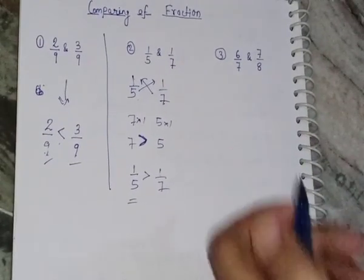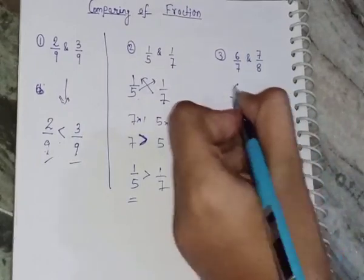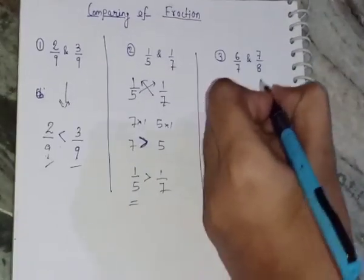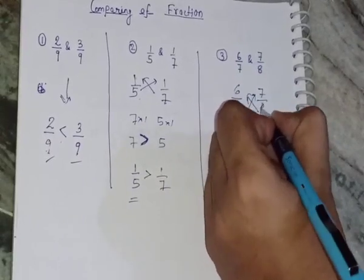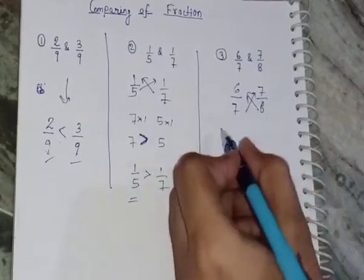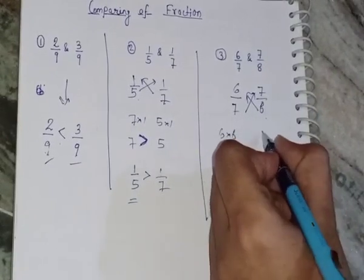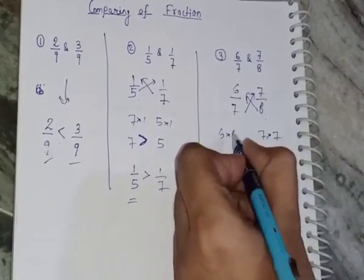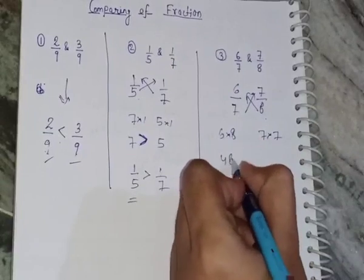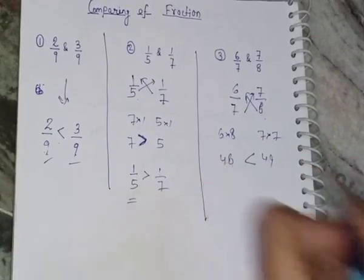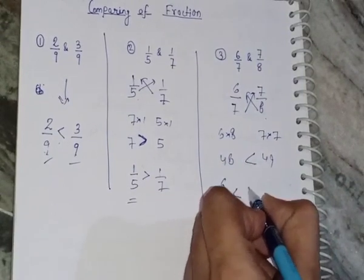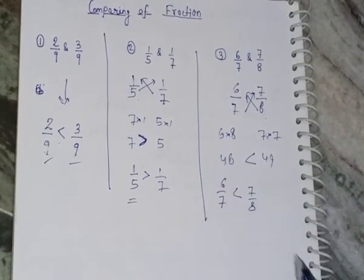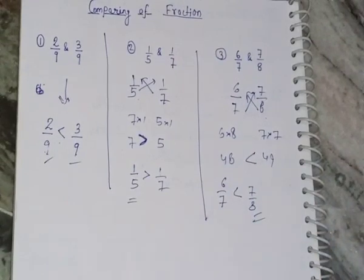The third example is 6 by 7 and 7 by 8. Using cross multiplication: 6 times 8 is 48, and 7 times 7 is 49. Since 49 is greater than 48, it means 6 by 7 is smaller than 7 by 8, or you can say 7 by 8 is greater than 6 by 7. This is the procedure to compare any two given fractions.